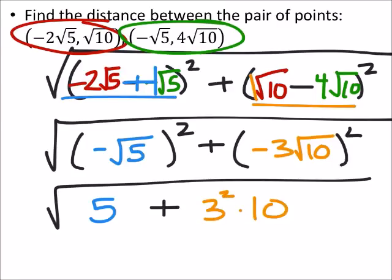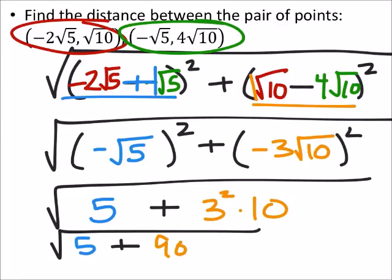Because I'm going to square the 3, or the negative 3, and the square root of 10. So this ends up being the square root of 5 plus 3 squared is 9 times 10 is 90. So this is the square root of 95.